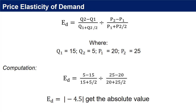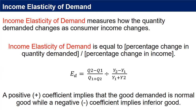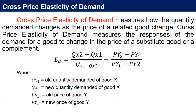Income elasticity of demand measures how the quantity demanded changes as consumer income changes. Income elasticity of demand equals percentage change in quantity demanded over percentage change in income. A positive coefficient implies that the good demanded is a normal good, while a negative coefficient implies an inferior good.